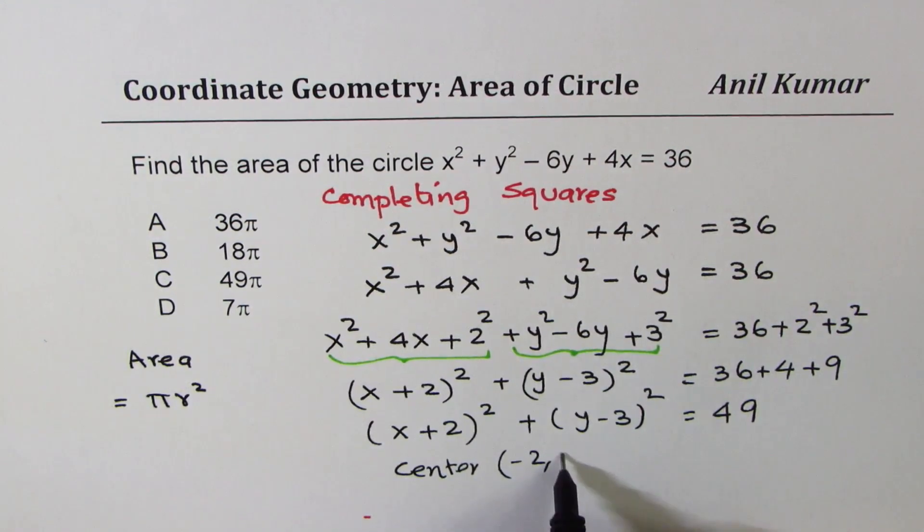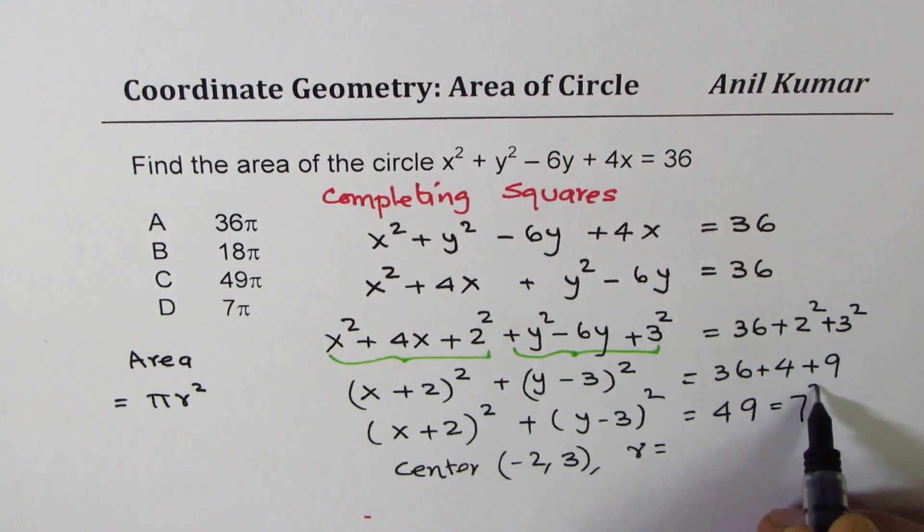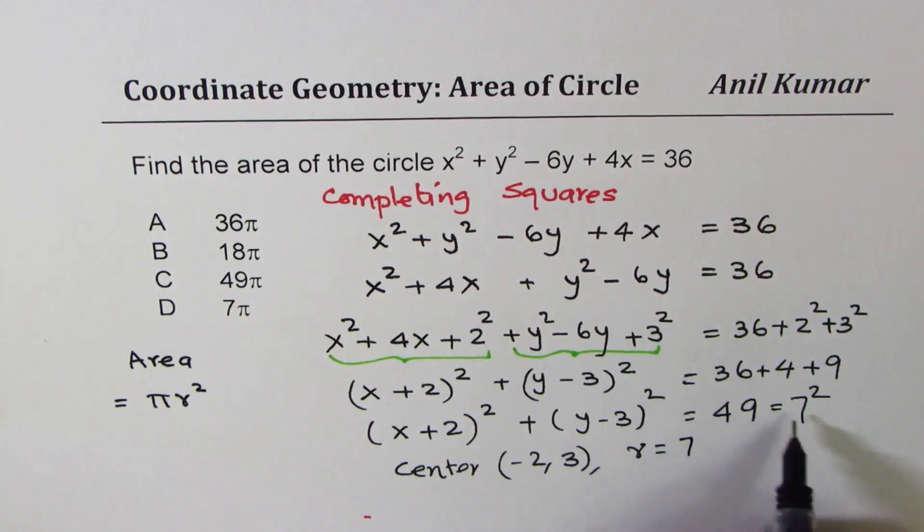At (-2, 3) with radius equals to 7. Square of 7 is 49.